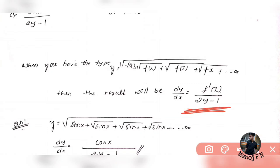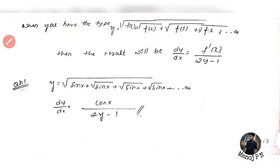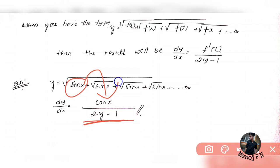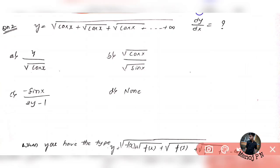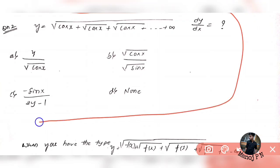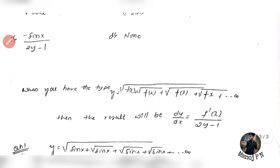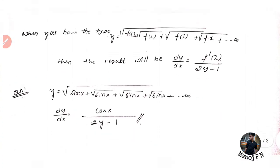So the answer is going to be cos x divided by 2y minus 1, and the trick is so simple. If you find the type y equal to f of x nested under infinite square roots, dy by dx equals f dash of x divided by 2y minus 1. This question is homework for you guys — let us know what the answer is in the comment section. If you have any doubts, I will answer in the comment section. I hope the two tricks I taught you guys are absolutely clear. And this was it for today. Thank you so much. This is Punya Gundana — like, share, and comment. Bye-bye.